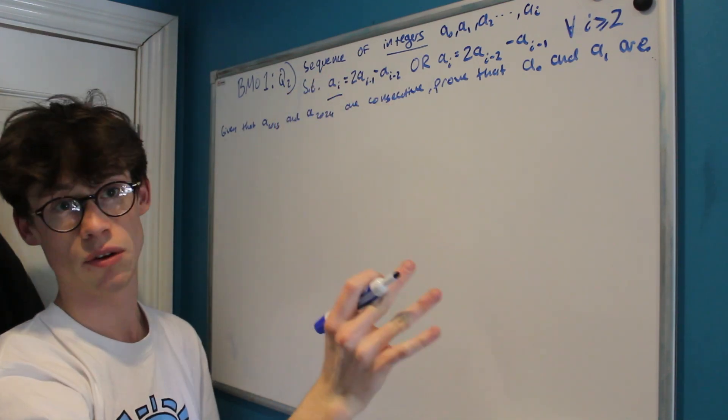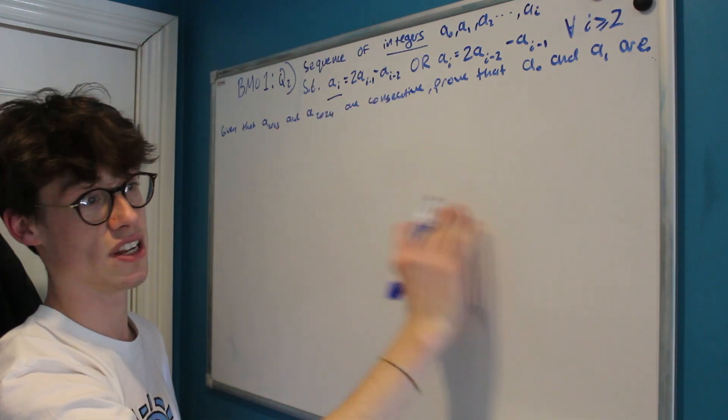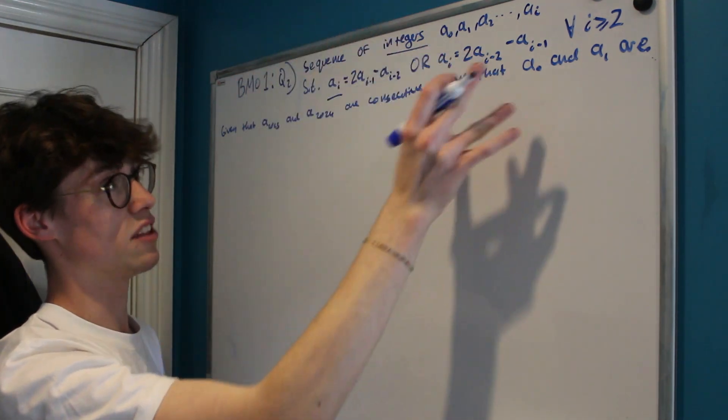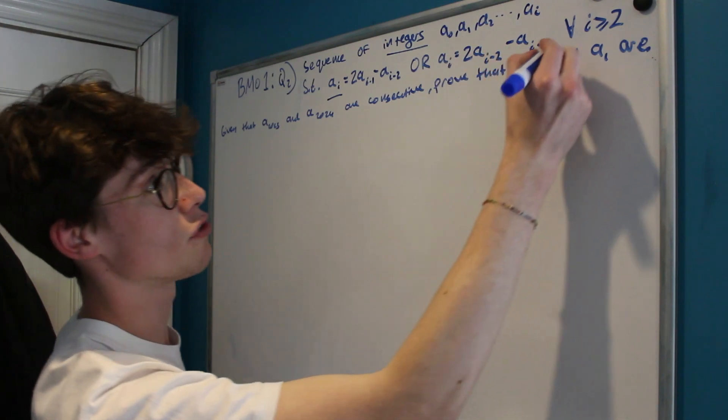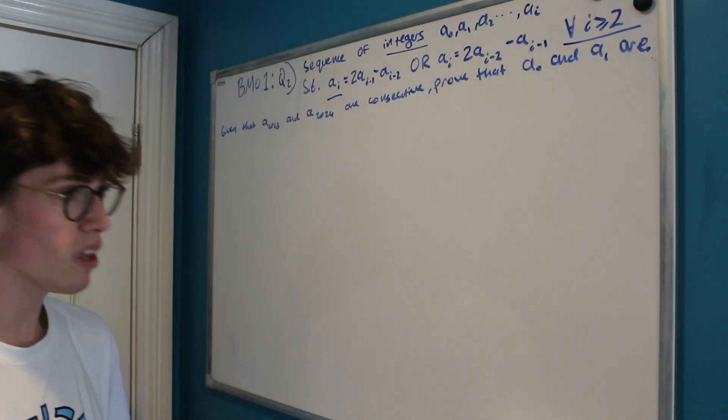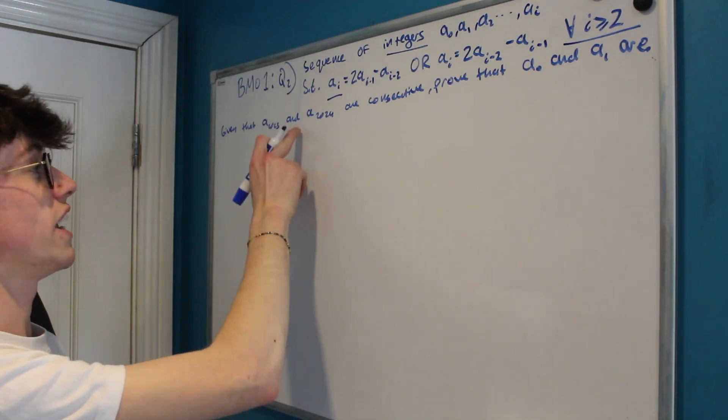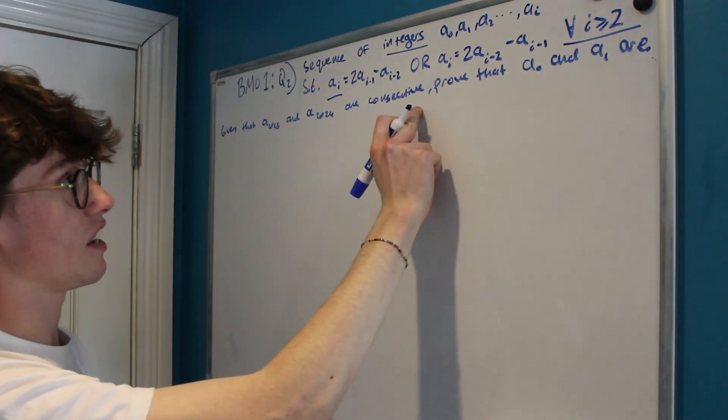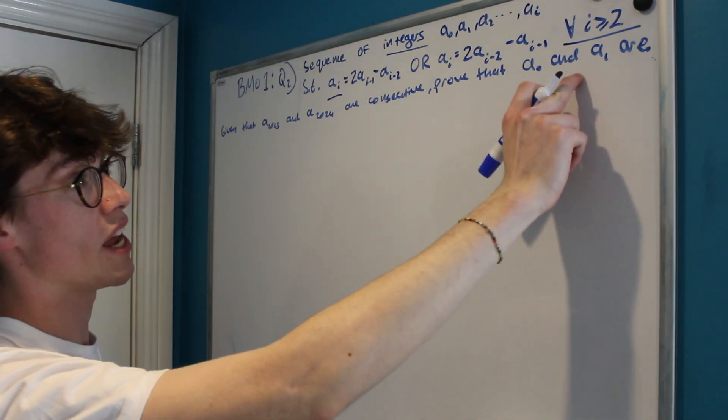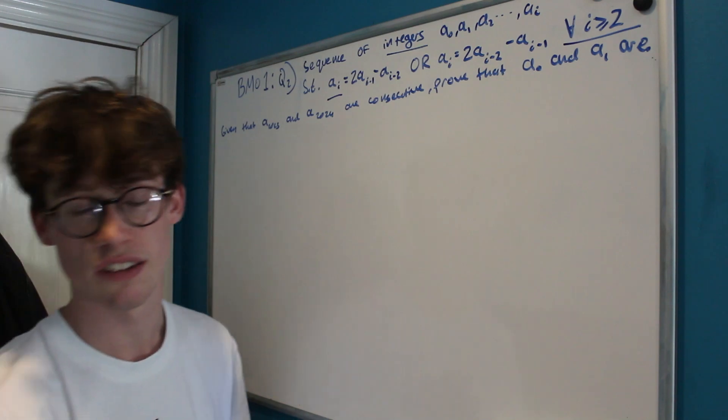Or it's equal to 2 times ai minus 2, which is 2 times the term that was 2 times before it, minus ai minus 1, which is the term that was previous. It doesn't tell us how to distinguish between these two for any given term, so we don't know, but we know it's got to be in either one of these forms and this is true for all i greater than or equal to 2. Now it tells us that a2023 and a2024 are consecutive integers, and what it asks us to prove is that a0 and a1 are also consecutive integers.